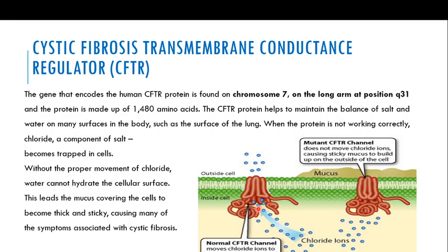Now let us discuss the cystic fibrosis transmembrane conductance regulator protein, known as the CFTR. The gene that codes for the human CFTR protein is found on chromosome number seven on the long arm at position q31. The protein made by this gene is 1,480 amino acids long. The CFTR protein helps to maintain the balance of salt and water on many surfaces in the body, such as the surfaces of the lung.